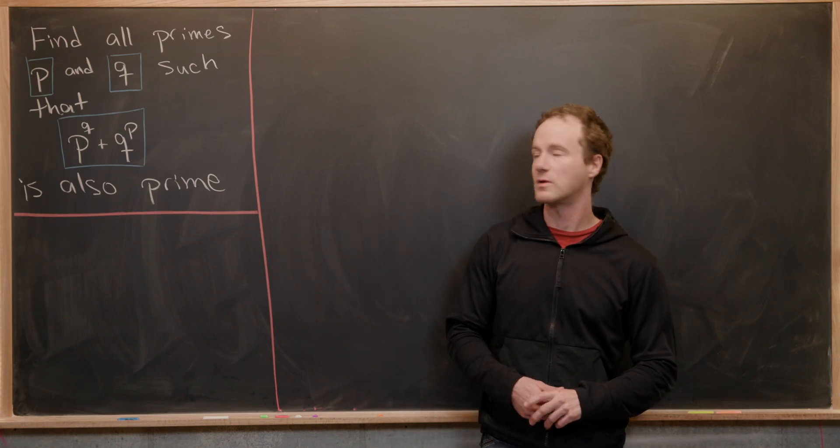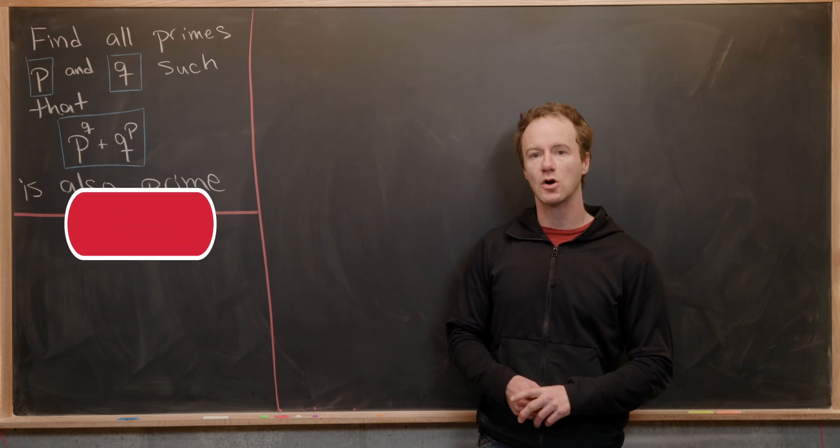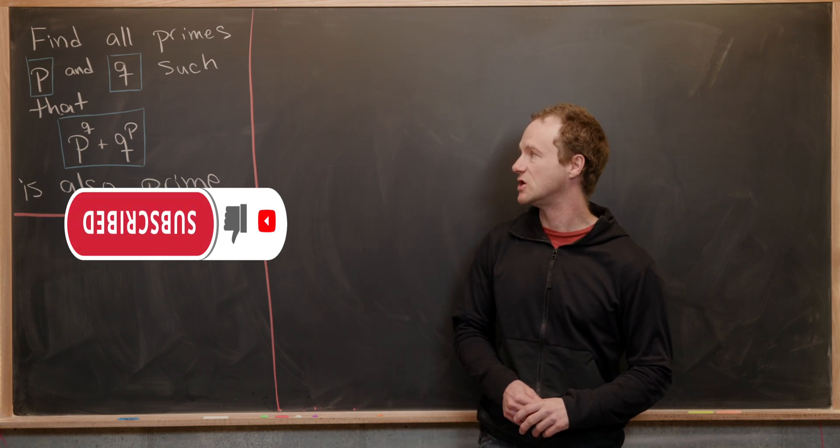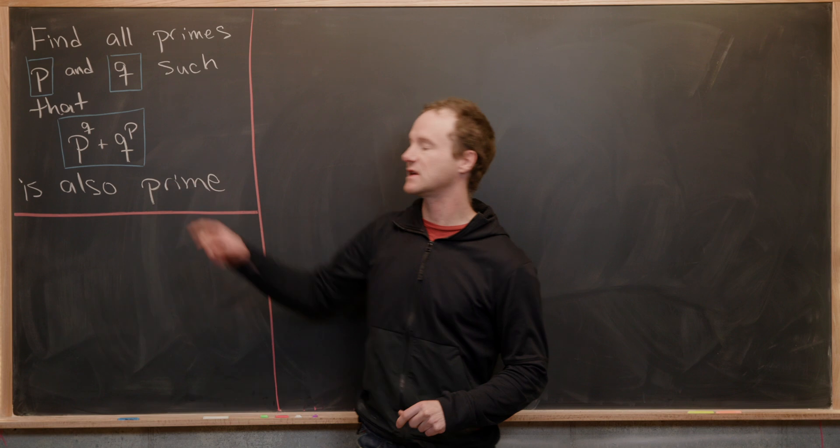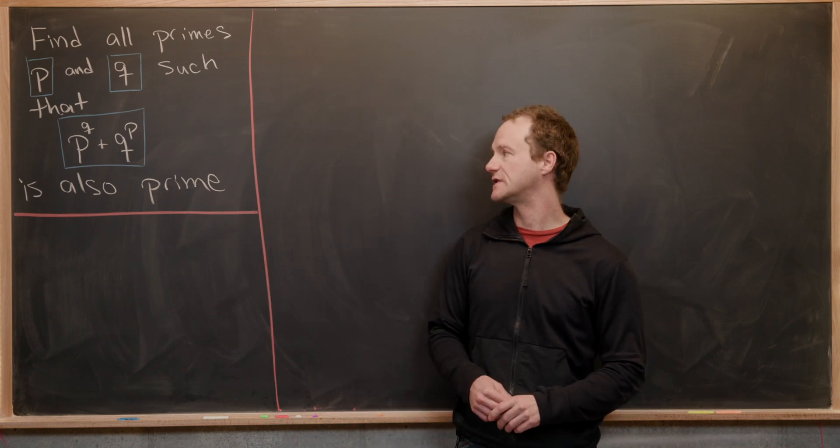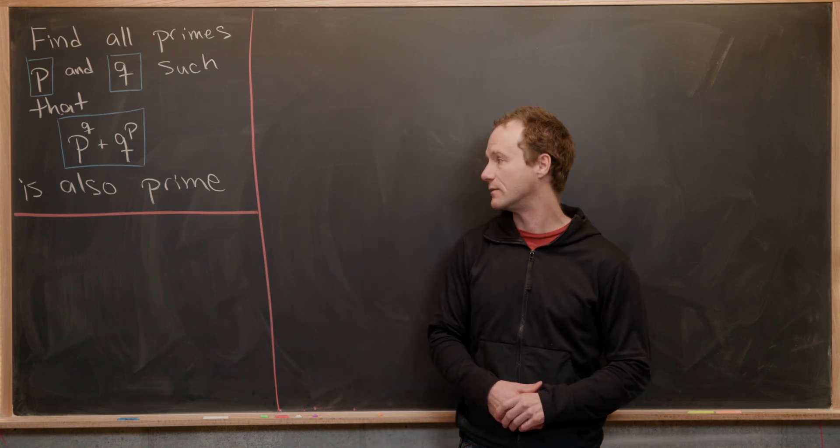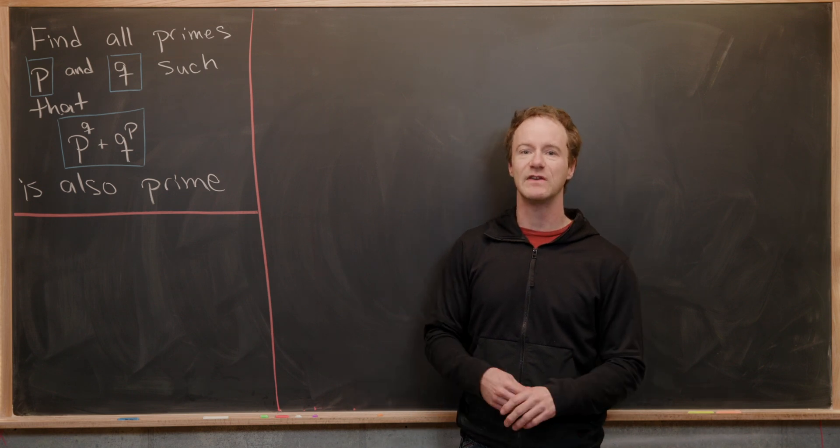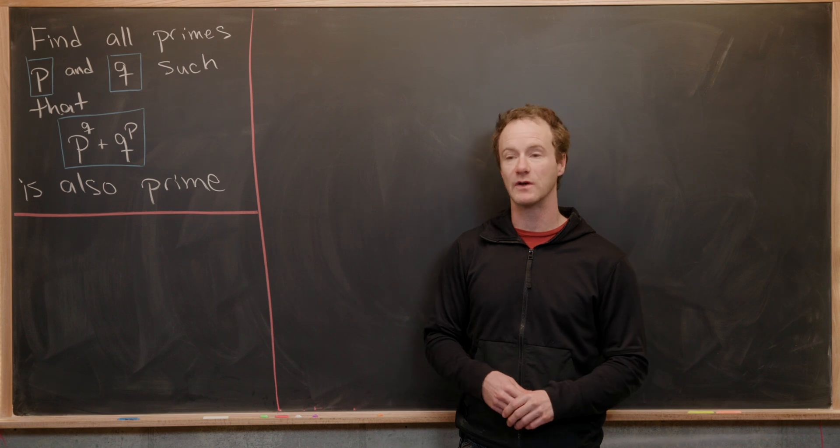Here we're going to look at a nice and quick number theory problem from a viewer. Our goal is to find all pairs of primes p and q such that p to the q plus q to the p is also a prime number. If you want to pause the video and give this a go right now, I'm not really going to give any hints because they kind of give it away really quickly. We'll jump right into the solution.